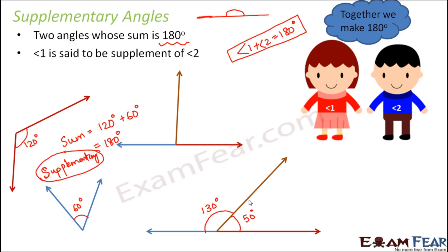Look at this one. Here you have one angle of 50 degrees and another angle of 130 degrees. When you sum them up, it is 180 degrees, which is a straight line. So these are supplementary angles. Here's another example: you see two angles — this is a right angle, so this is 90 degrees, and this is also 90 degrees. The sum of these two is also supplementary. So the sum of two right angles is always supplementary.